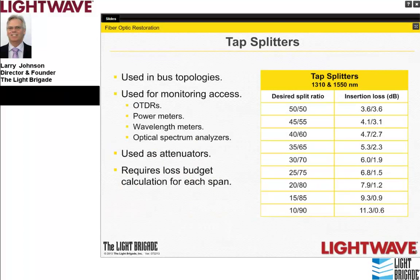Tap couplers and tap splitters are the same devices as optical splitters and couplers—the terms are interchangeable. The industry prefers the term 'optical splitter' over 'optical coupler' to avoid confusion with connector adapters. Notably, the G.671 standard still uses the term WIC—Wavelength Independent Couplers—which creates some terminology confusion.